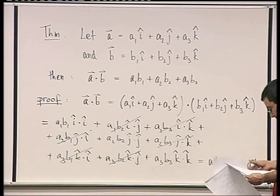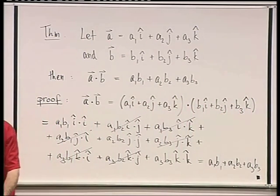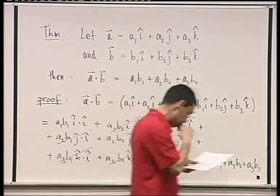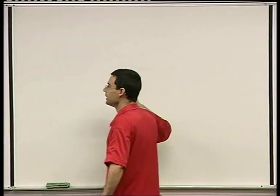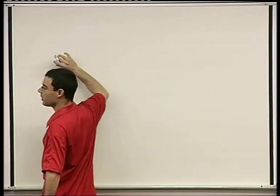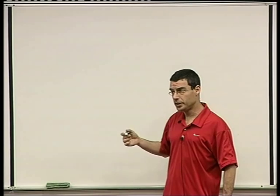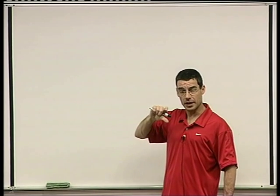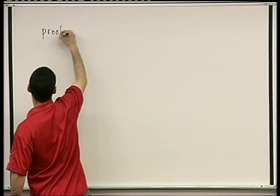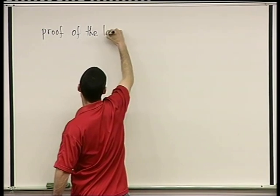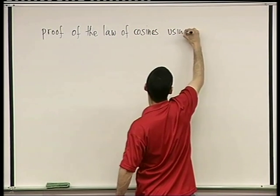Before we move on to the next product, here's a little anecdote — not in the main line of discussion, but interesting. We mentioned the law of cosines earlier and used it to find the length of a sum of two vectors. Now I want to show a proof of the law of cosines using the dot product.